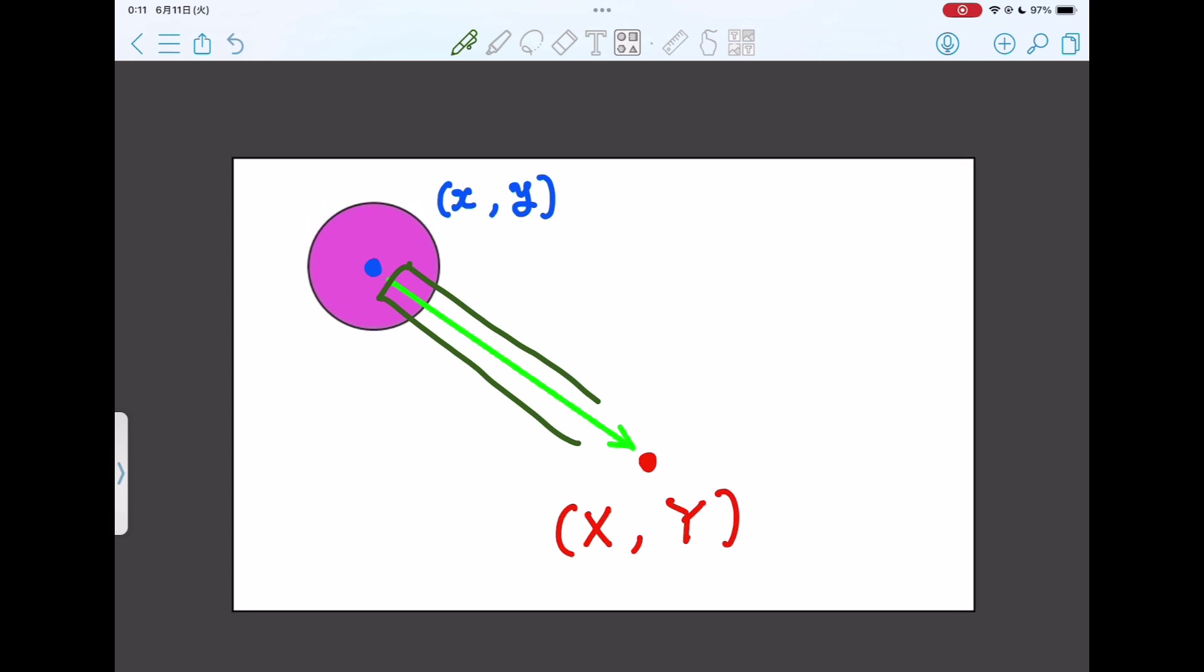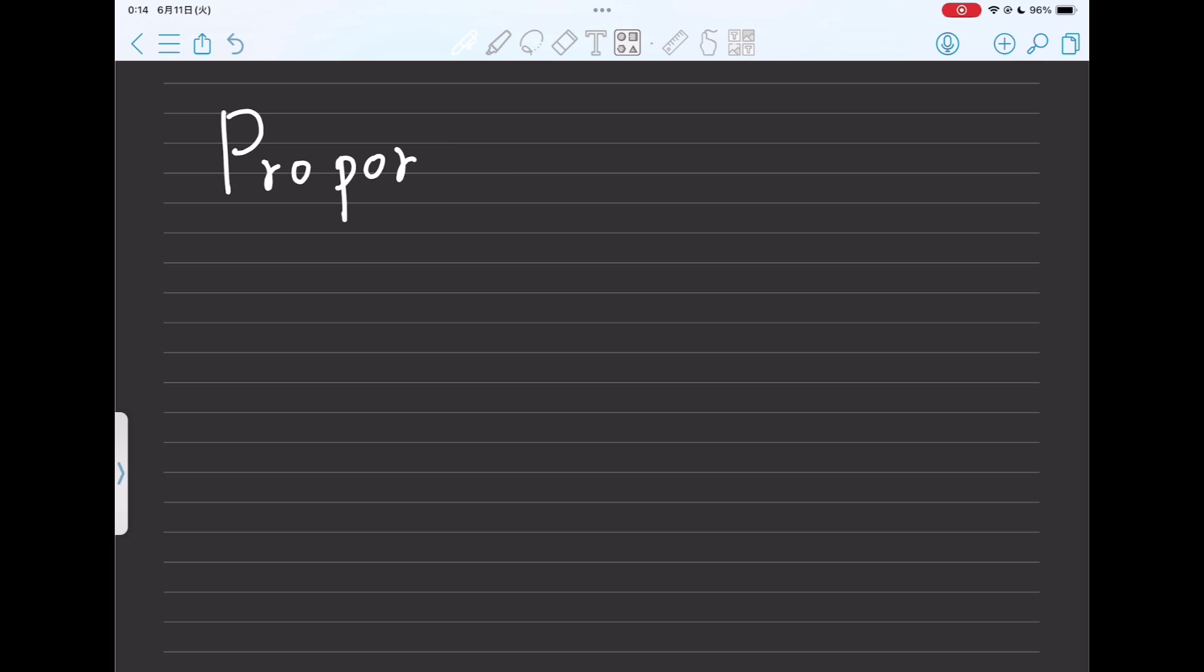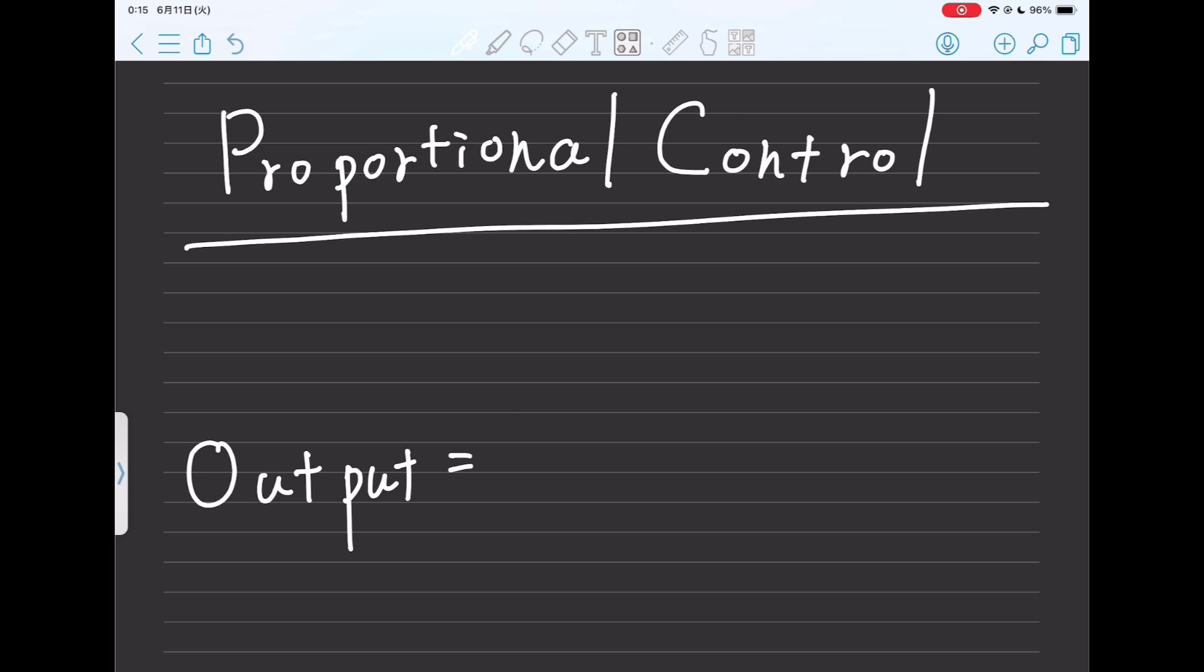To move the ball closer to the target coordinates more quickly, the tilt should be steeper when the ball is farther away from the target coordinates. This is called proportional control and can be expressed in the following equation. This can be called ball position based control.